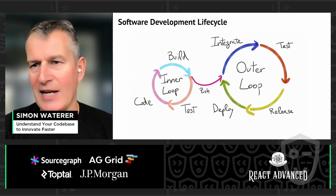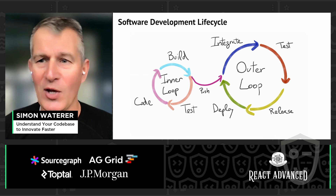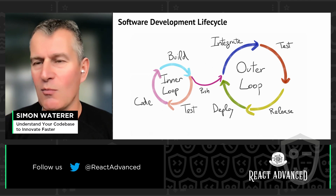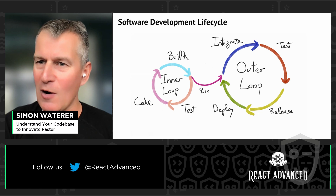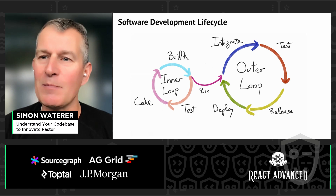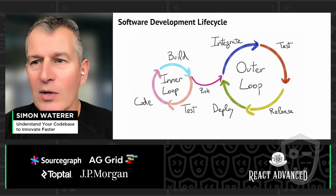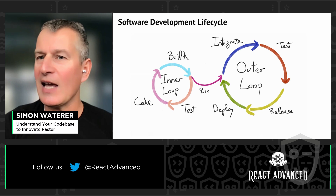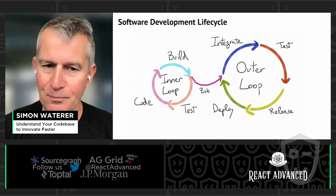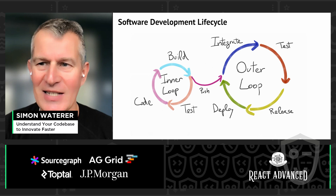The key challenge people face is interruptions to that flow — context switching. Most organizations have planned interruptions like meetings to update people on progress. But there are also unplanned interruptions where other team members ask us questions. And of course there may be things we don't understand — we don't have full context or full understanding — and we have to go away and actually fill in the gaps with our knowledge in order to achieve the task. How can we minimize those interruptions so everybody has context and fast flow in how they're writing software?